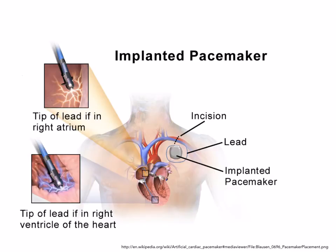In some people, the pacemaker stops working properly, so an artificial pacemaker can be placed into the person's heart. You can see here the battery-operated implanted pacemaker, which produces an electrical impulse at a regular rate of about one impulse per second. Artificial pacemakers can last up to about 10 years before they need to be replaced.